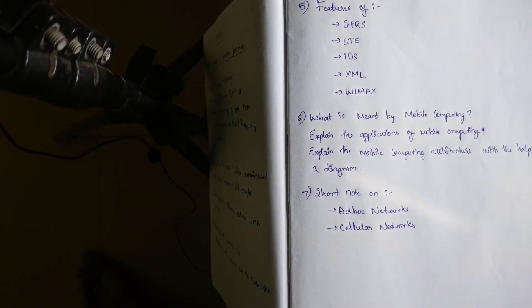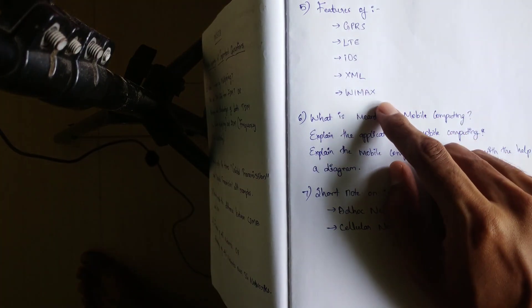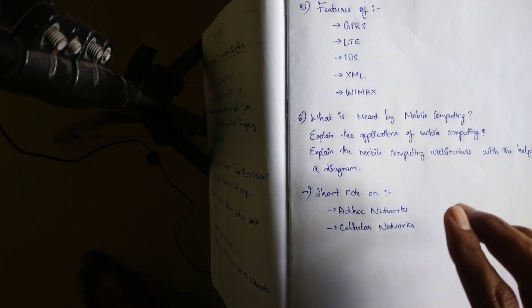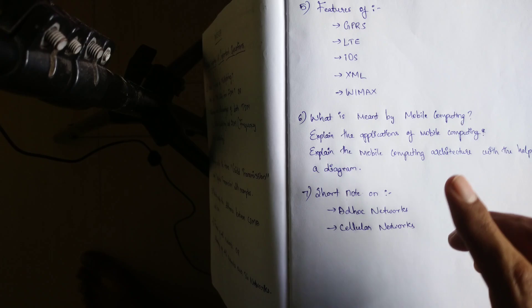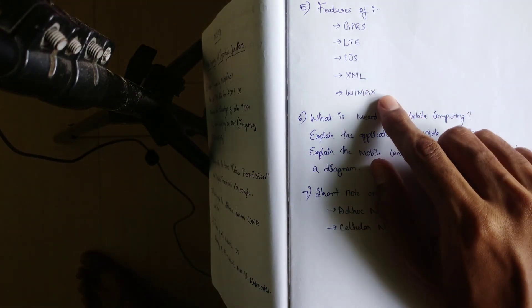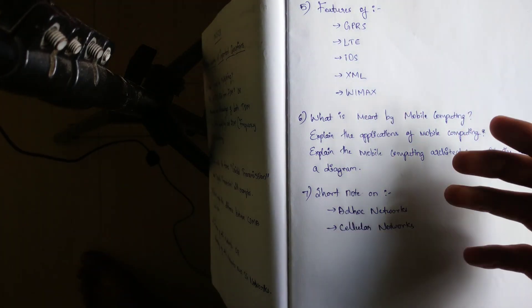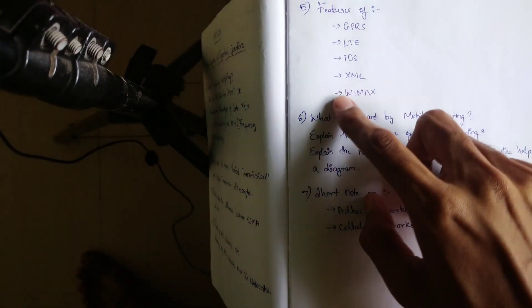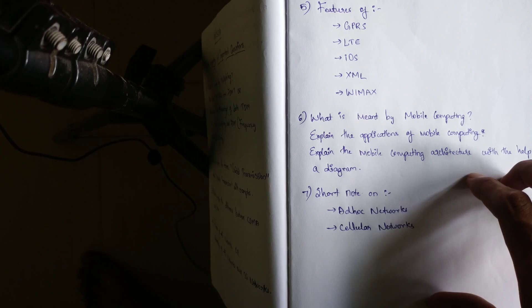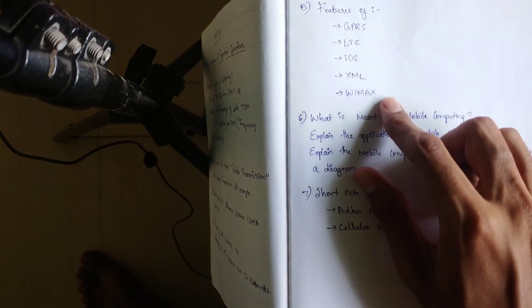Going forward, our fifth important topic. It's basically the features of some words that we are familiar with: GPRS, LTE, iOS, XML and WiMAX. So guys, for sure, we can expect at least 2 to 3 words to explain the features of these things in the examination. Either it may be GPRS or LTE or it may be iOS or XML. WiMAX we can expect as a separate question. So please go through these topics.